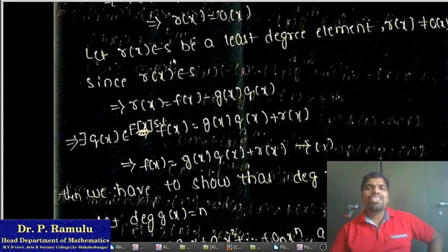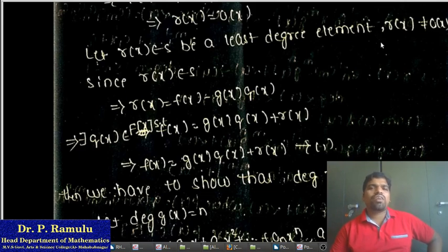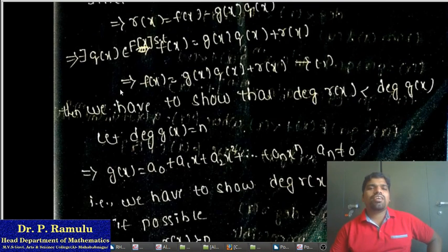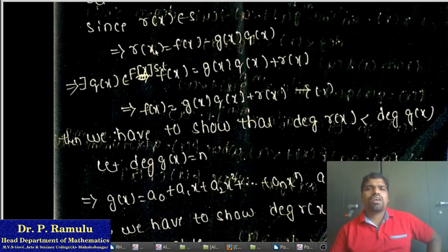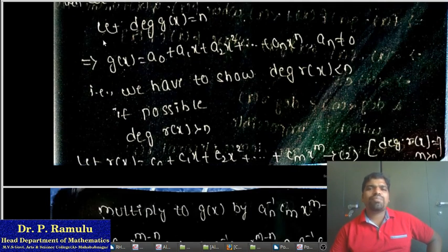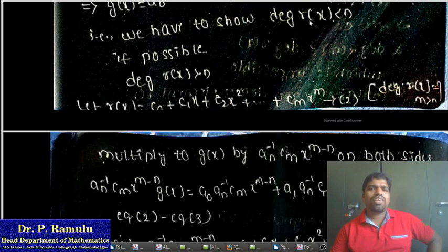Next, let r(x) be the least degree element in S with r(x) ≠ 0. We want to show that degree of r(x) is less than degree of g(x). Since r(x) belongs to S, there exists q(x) in F[x] such that f(x) = g(x)·q(x) + r(x). Let degree of g(x) = n, so g(x) = a₀ + a₁x + a₂x² + … + aₙxⁿ where aₙ ≠ 0. We want to show degree of r(x) is less than n.